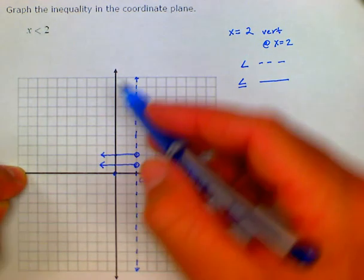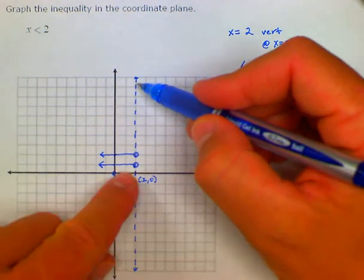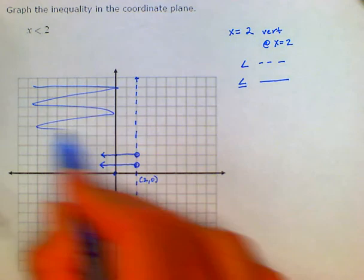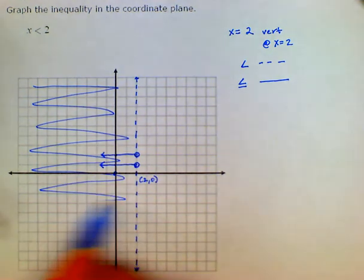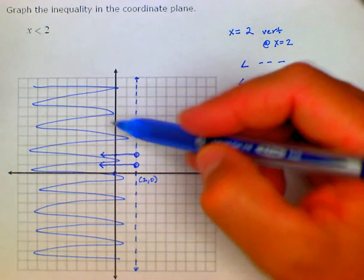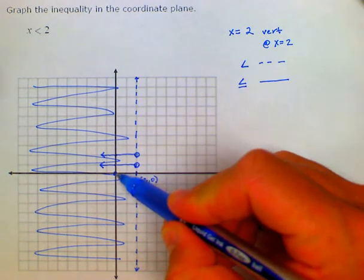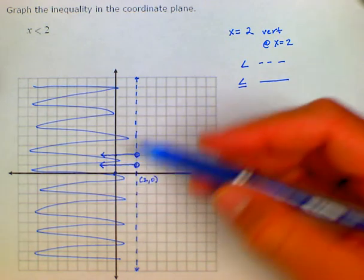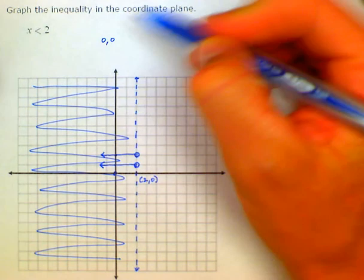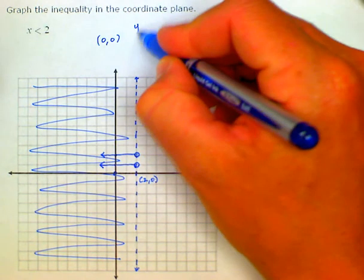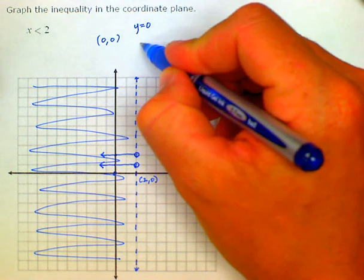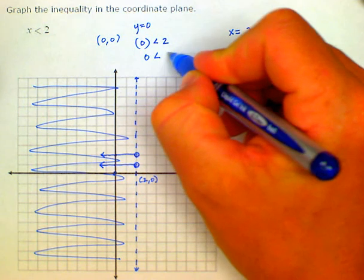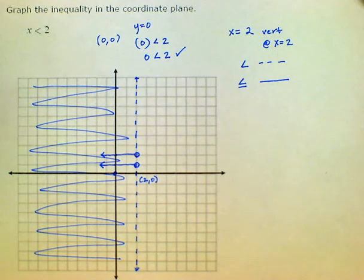So anything to the left of this dashed line is included. So I would shade all of this. And if I wanted to check my work, again I can use 0 as the easiest point to choose to plug back in. The point 0, 0, when y equals 0, x is also 0. So I would plug in x for 0, which is less than 2, which is true and it checks out.